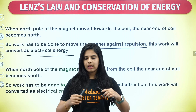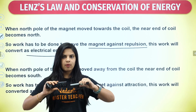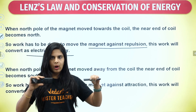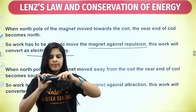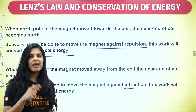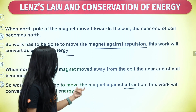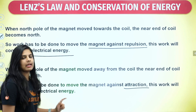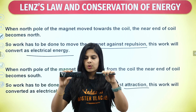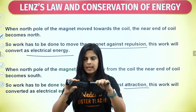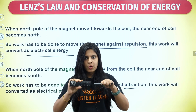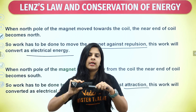When the north pole of the magnet is moved away from the coil, work has to be done to move the magnet against attraction. This work is converted as electrical energy. So: first case — magnet north pole near the solenoid near end causes north pole on solenoid, repulsion, and work against repulsion becomes electrical energy. Second case — south pole near end.